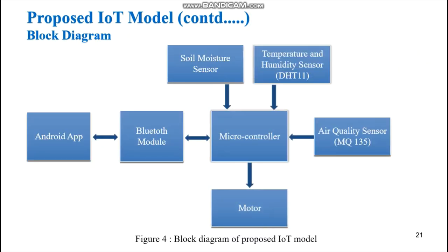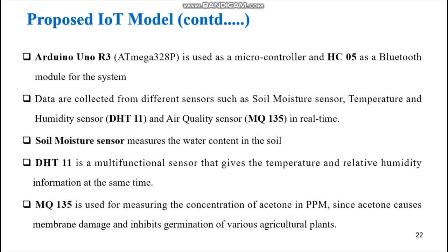The block diagram of the proposed IoT model uses three sensors: a soil moisture sensor, a temperature and humidity sensor, and an air quality sensor. These sensors are interfaced with a microcontroller board. Data collected from the sensors is sent to the Android app through a Bluetooth module. We used Arduino as the microcontroller board and HC05 as the Bluetooth module. DHT11 provides temperature and humidity data, and MQ135 measures the concentration of acetone.